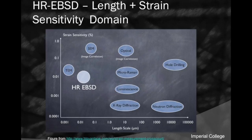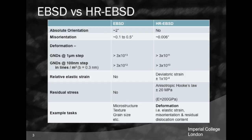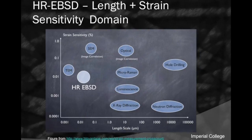High-res EBSD has a very good strain sensitivity — 1 times 10 to the minus 4 — which is now competing very well with neutron diffraction measurement. Of course there are other techniques; this isn't the only game in town, and we do a lot of work comparing and contrasting x-ray diffraction with high-res EBSD, which you'll see in my talk later in the schedule.